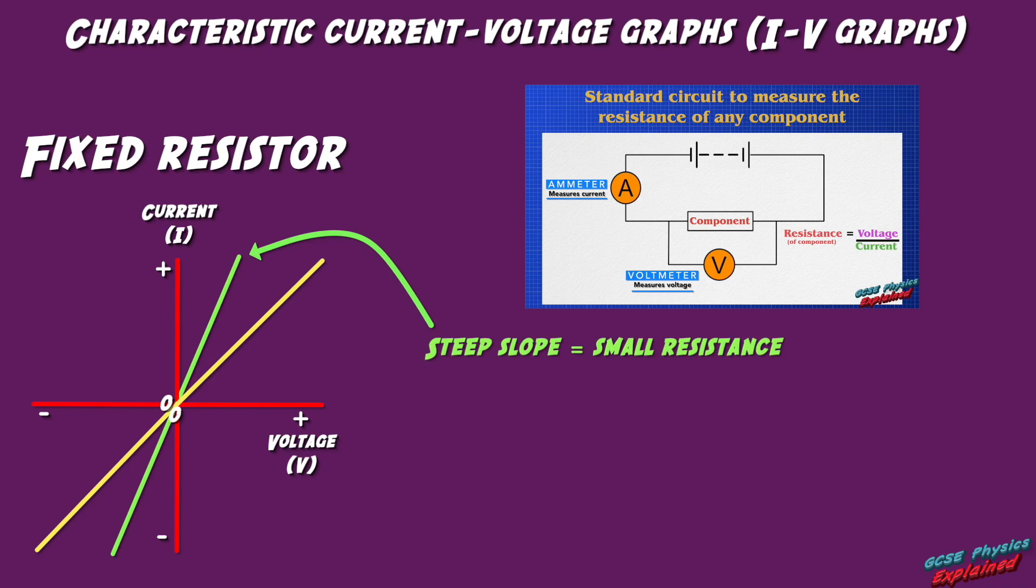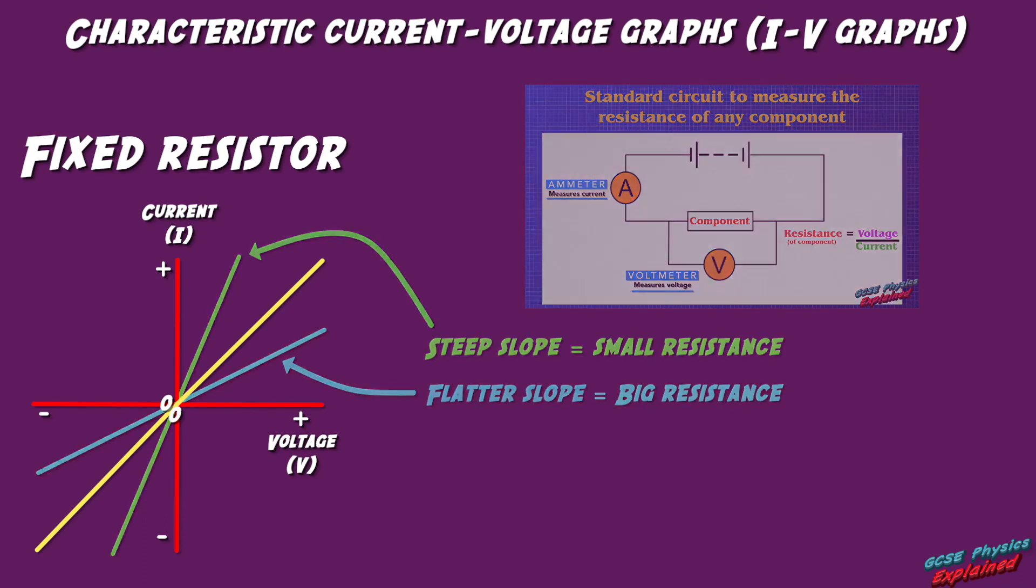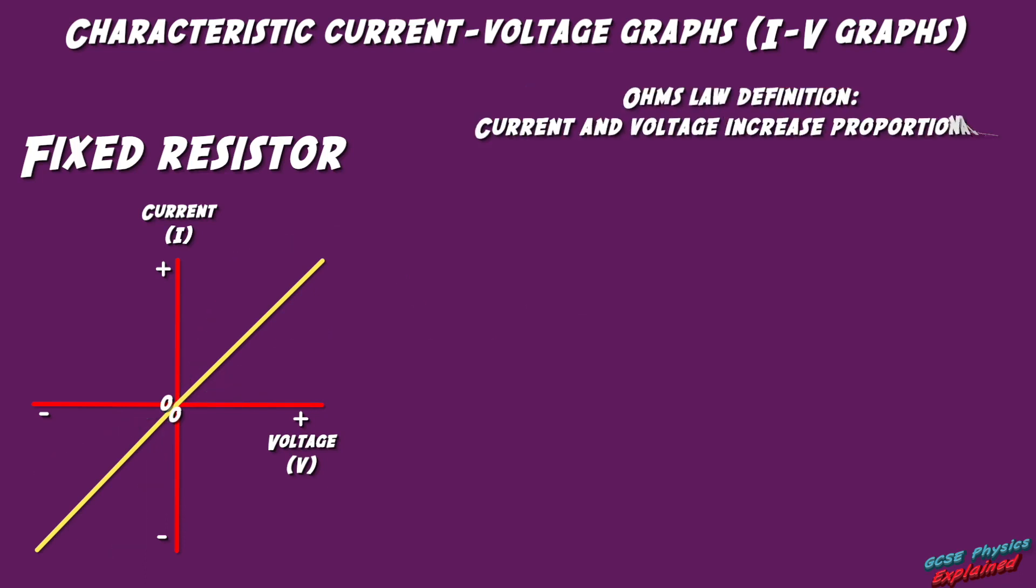And some fixed resistors have a big resistance, which means they have a flatter or more gentle constant slope. Remember the flatter the slope, the bigger the resistance. Fixed resistors are what we call ohmic resistors, which means that they obey Ohm's law.